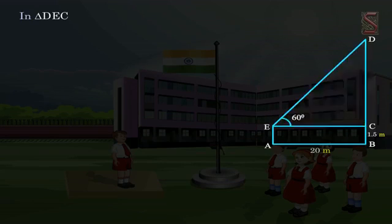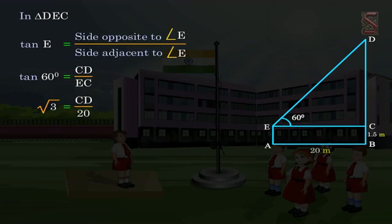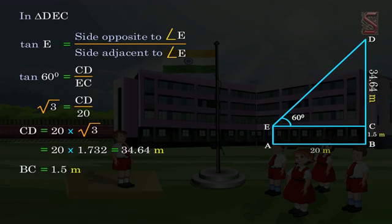In a right angle triangle DEC, tan E is the side opposite to angle E by the side adjacent to angle E. Hence, tan 60 degrees is equal to CD by EC. The value of tan 60 is root 3 and EC is equal to 20 meters. So, CD is equal to 20 into root 3, that is 20 into 1.732, which is equal to 34.64 meters.